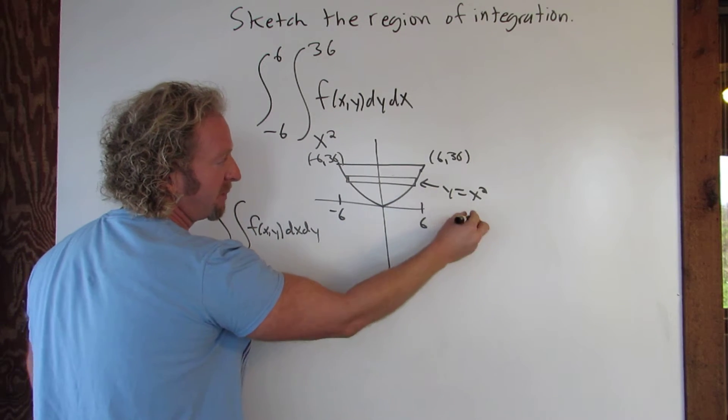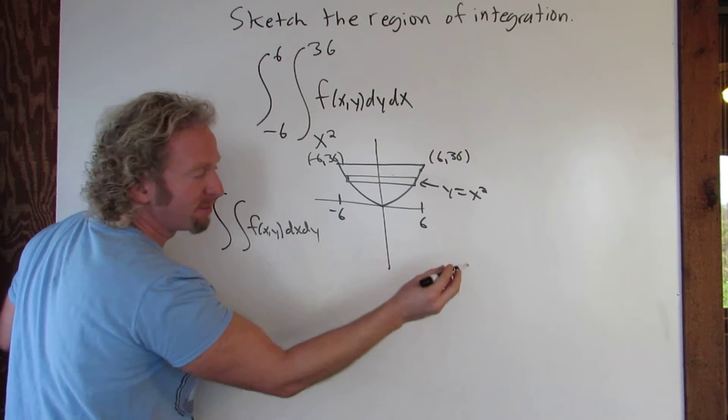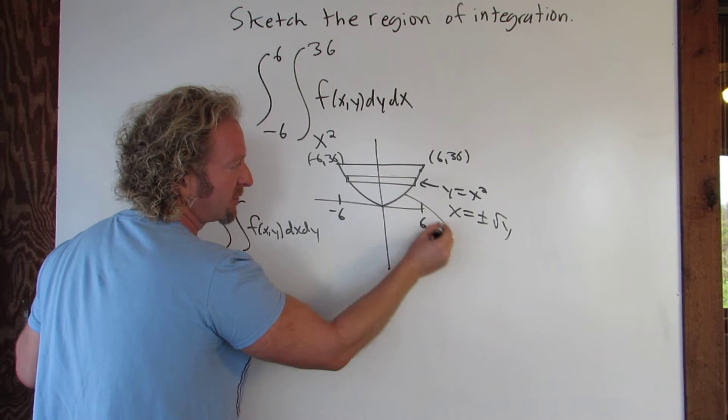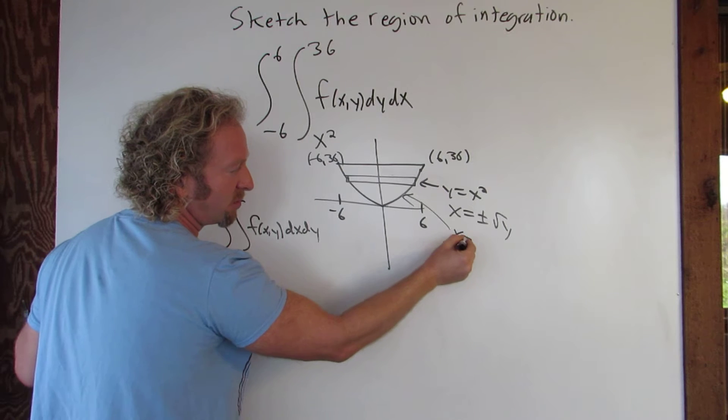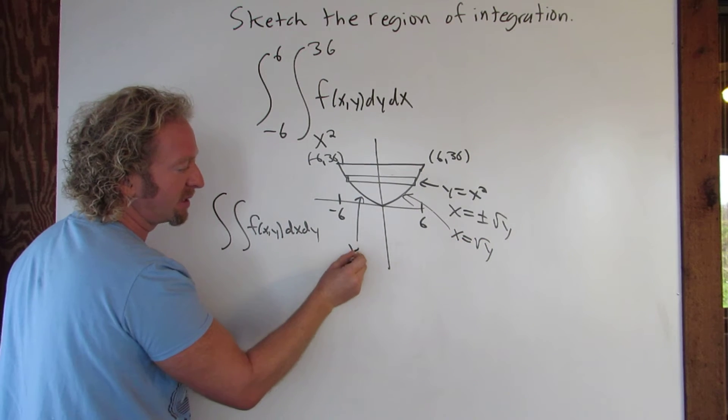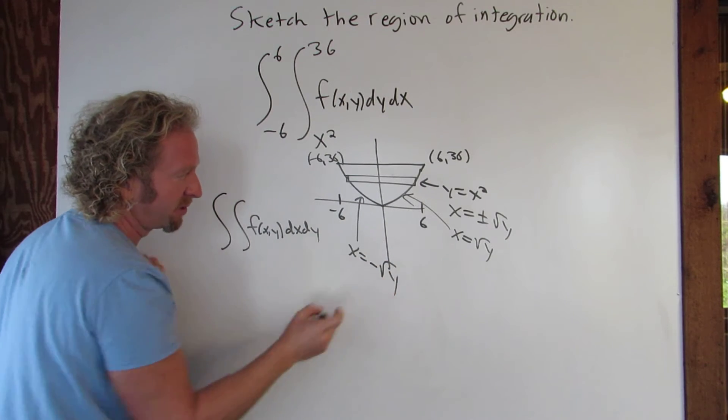So if this is y equals x squared, if you solve for x you would take the square root of both sides and you would get plus or minus the square root of y. So this function here, this is x equals the square root of y as a function of y. And this one here, this is x equals negative square root of y as a function of y.